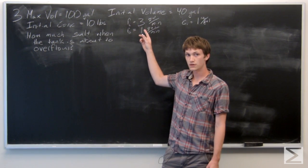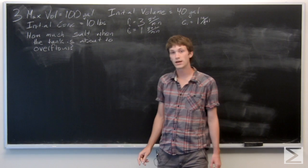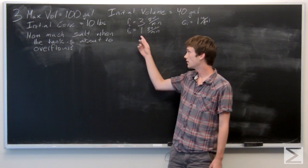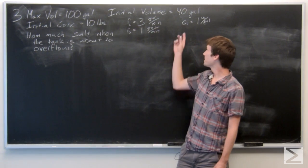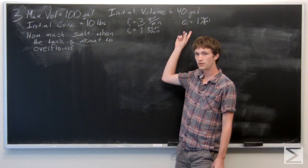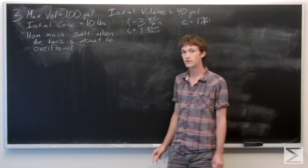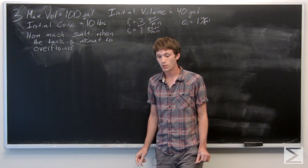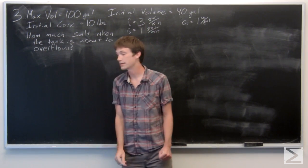We know that there's a flow into the tank at a rate of 3 gallons per minute, a flow out of the tank at a rate of 1 gallon per minute, and that the incoming concentration has 1 pound of salt per gallon. We want to know how much salt is in the tank when the tank is about to overflow.